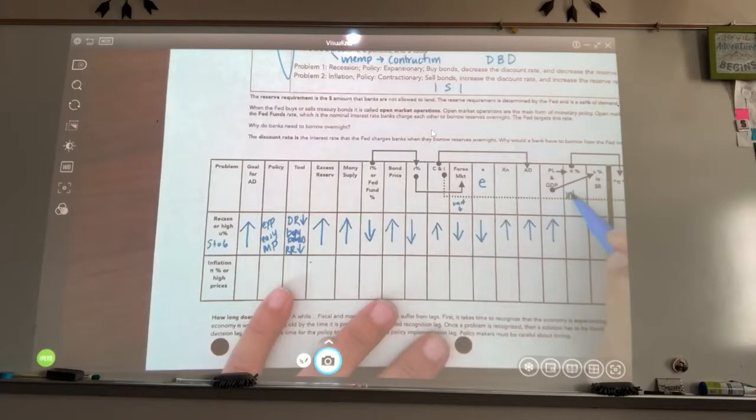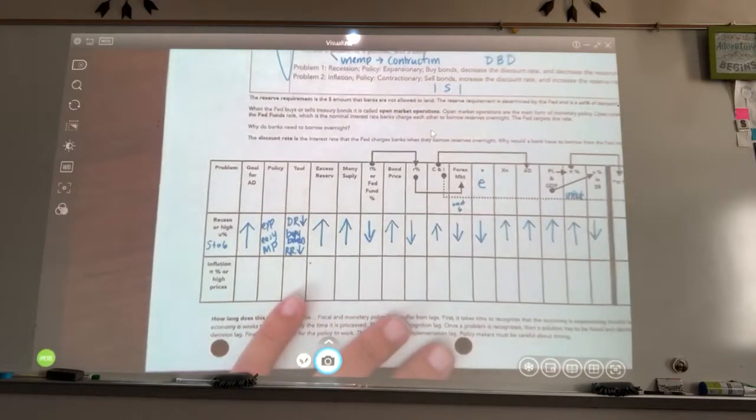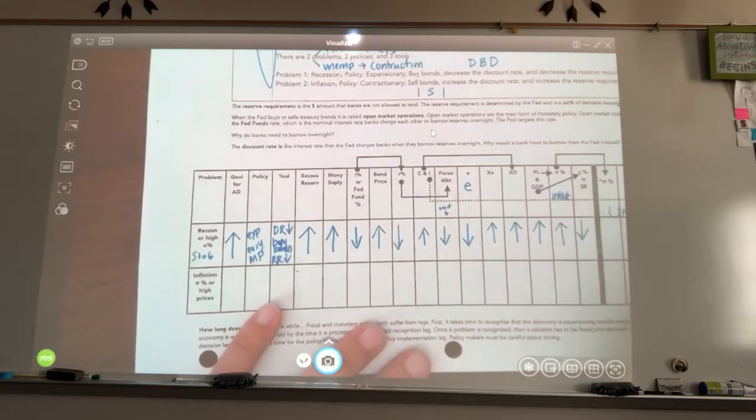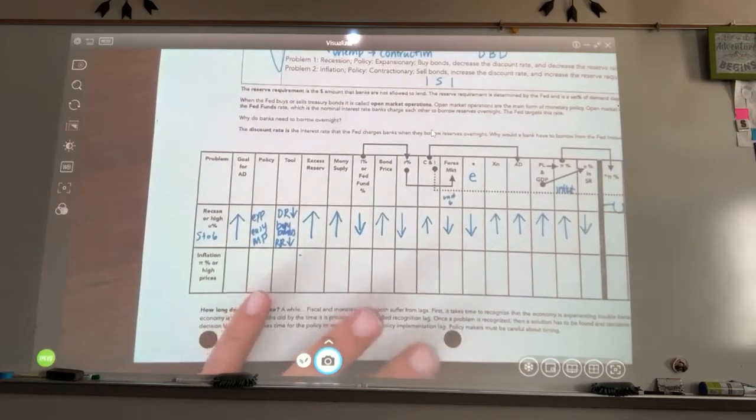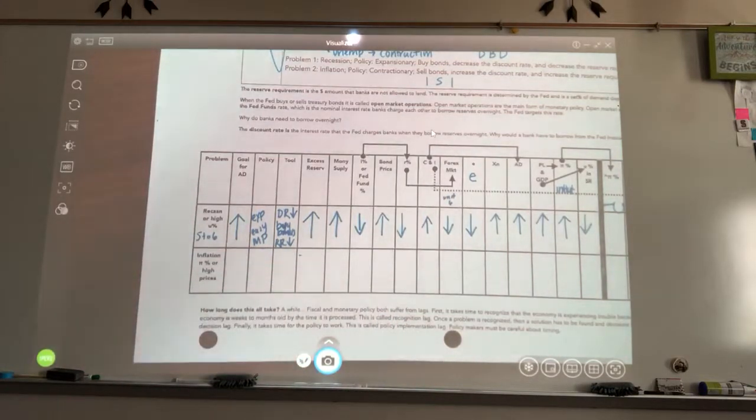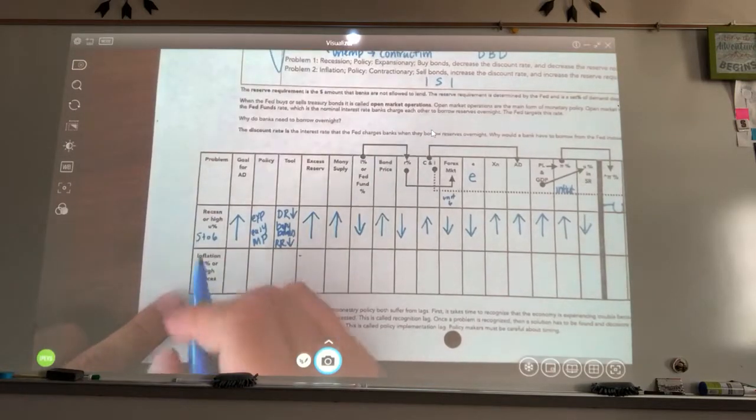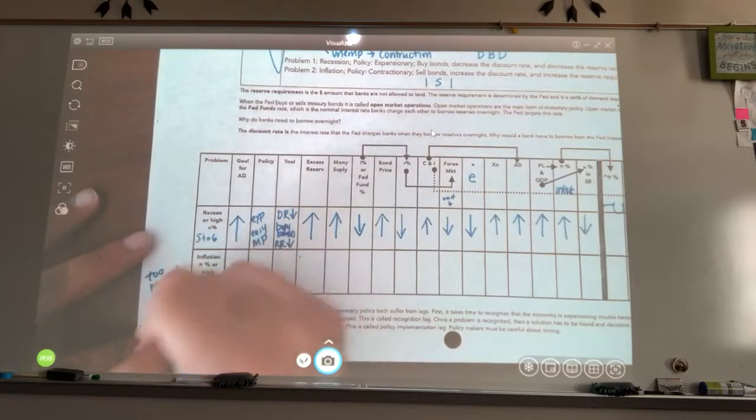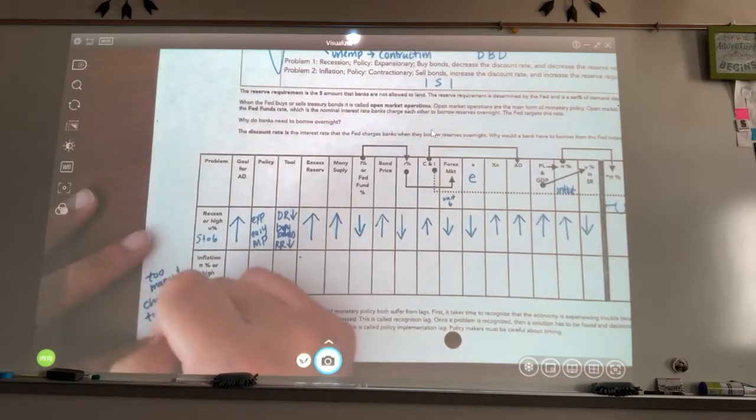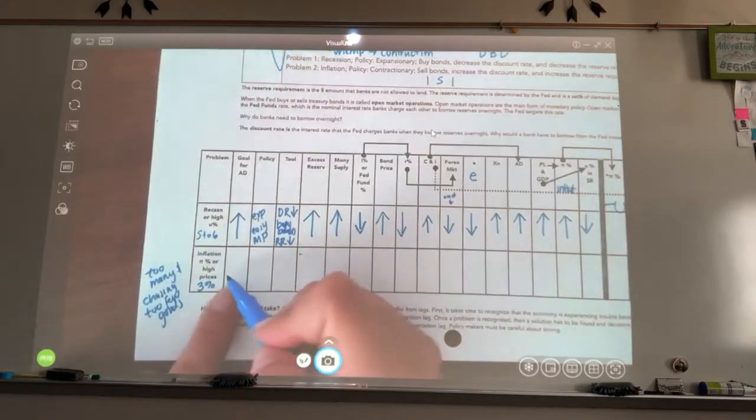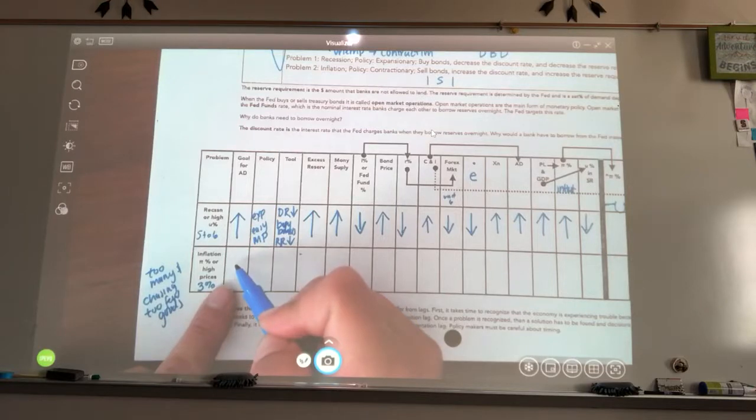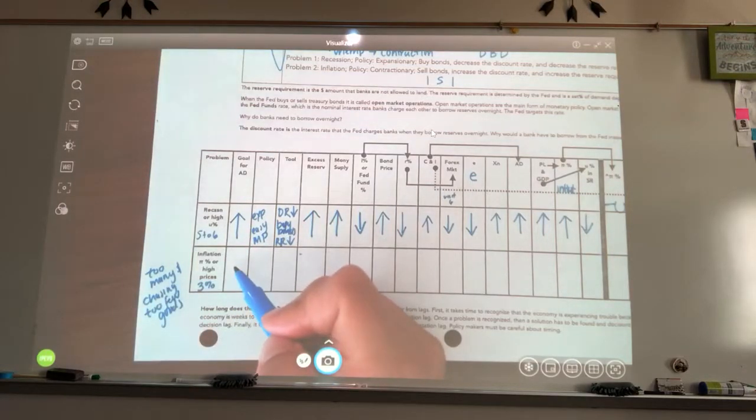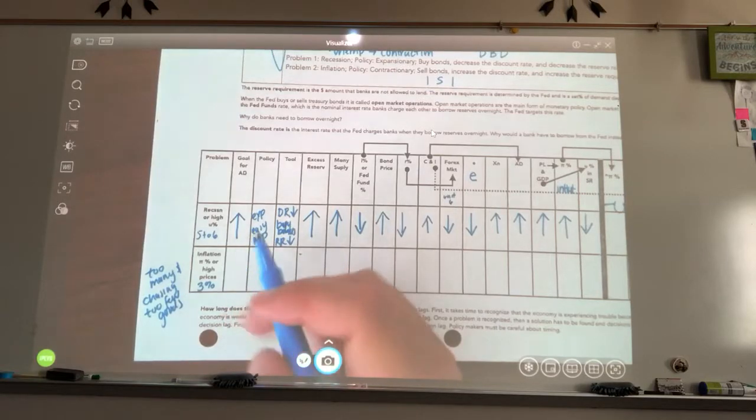This is inflation right here. What's going to happen to inflation now? It's going to go up. Let's look at it now over here. Inflation. Inflation has to be over what percent? Three percent. I know that I have too many dollars chasing too few goods. So, people have a lot of money, right? So, what has happened to aggregate demand? It's gone what? Up. So, do I want aggregate demand to go up any higher? So, what's my goal for aggregate demand? Bring it down.